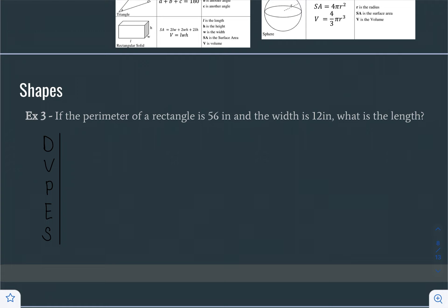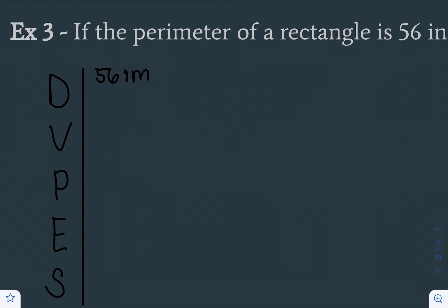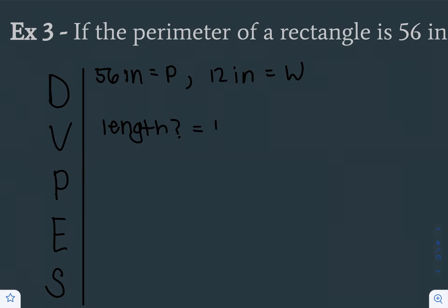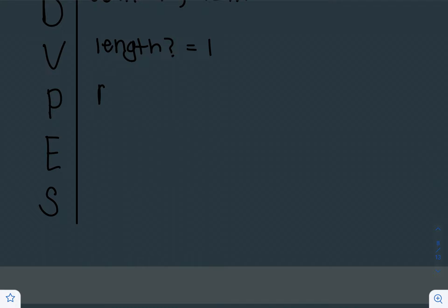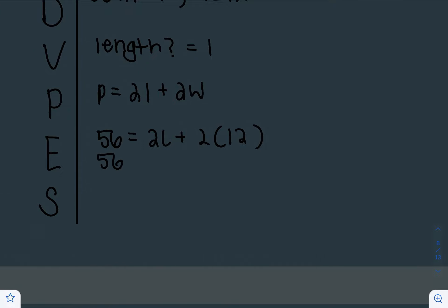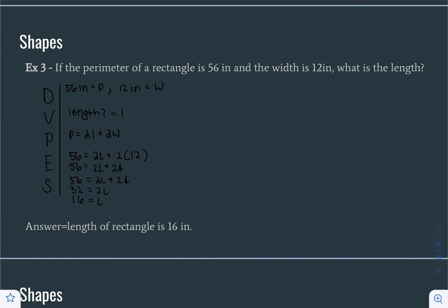Example 3: If the perimeter of a rectangle is 56 inches and the width is 12 inches, what is the length? In the data step, we know that the perimeter equals 56 inches and w equals 12 inches. What we don't know is the length, so we're going to call that L. Now we're going to plan using the formula: P equals 2 times the length plus 2 times the width. So the equation is 56 equals 2L plus 2 times 12, giving us 56 equals 2L plus 24. Solving: 32 equals 2L, so L equals 16. The length of the rectangle is 16 inches.